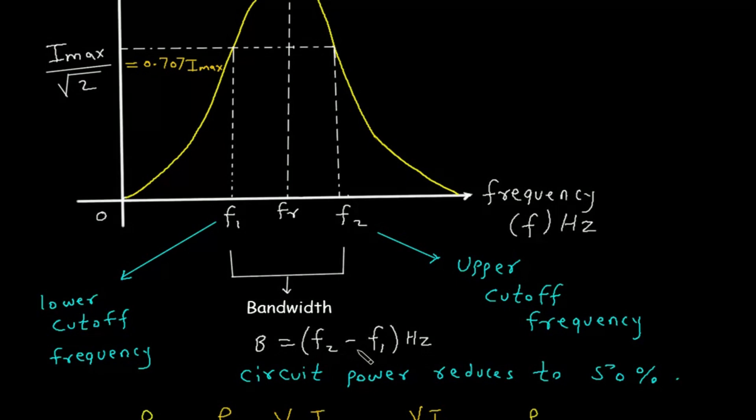B equals F2 minus F1. The unit of frequency is Hertz. F1 is called the lower cutoff frequency and F2 is called the upper cutoff frequency.